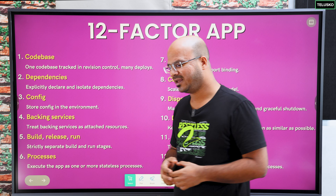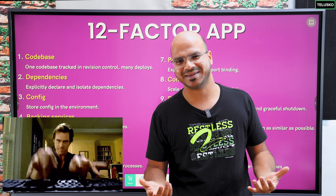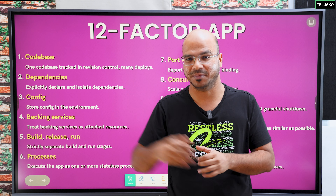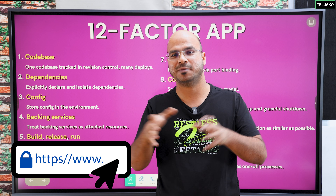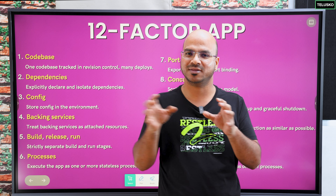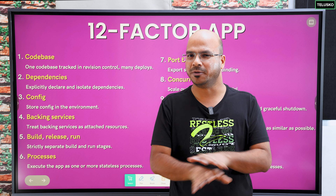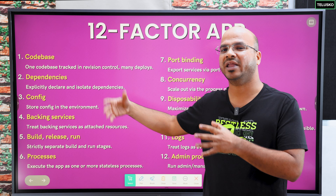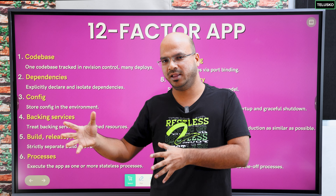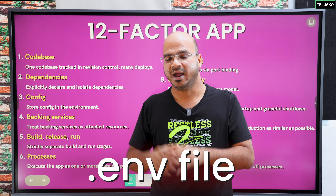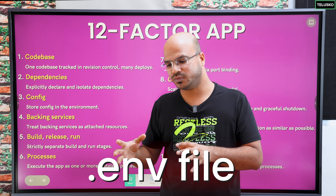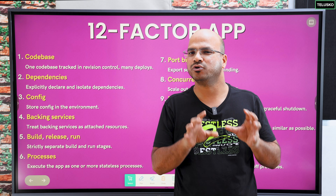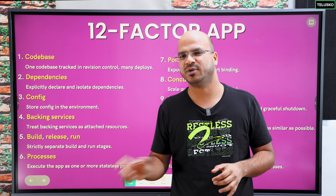The third factor is configuration. Don't hard-code things like database URLs, usernames, passwords, or port numbers inside your code. Store configuration in the environment — create a separate environment file and save all values there. The advantage is that even if you change your physical servers or environment, you don't have to change your source code. Just change the environment variable and you're done. The idea is: don't touch your code once it is built.